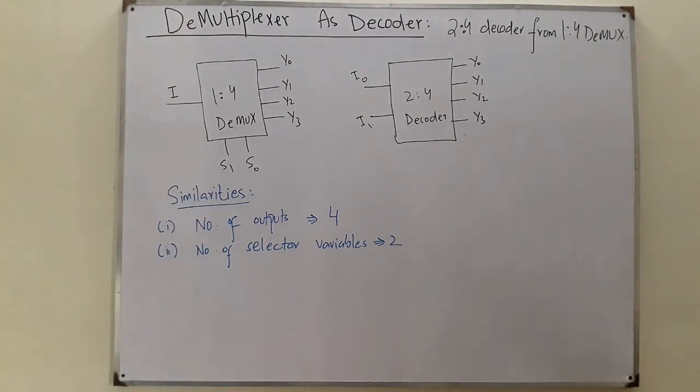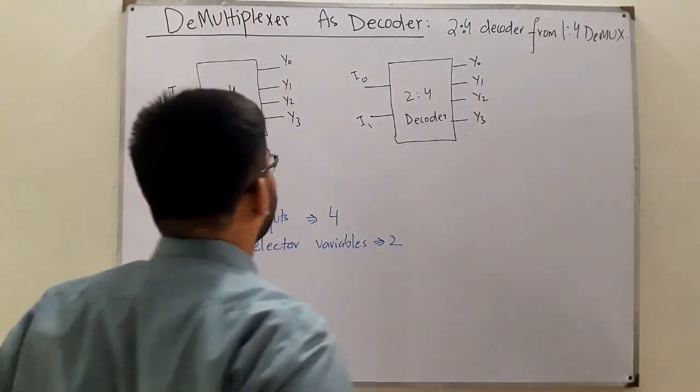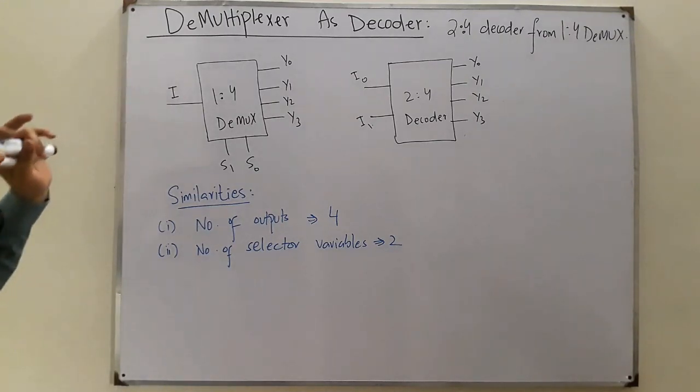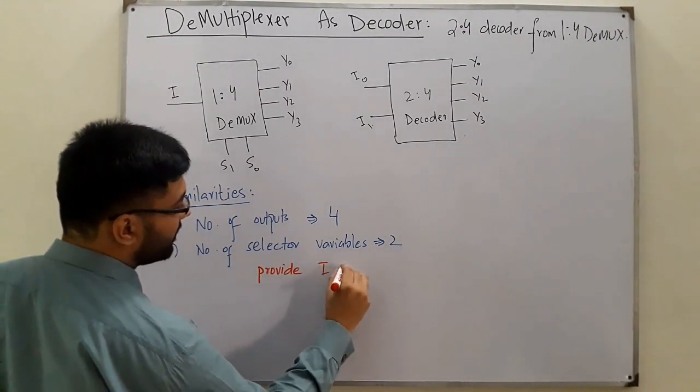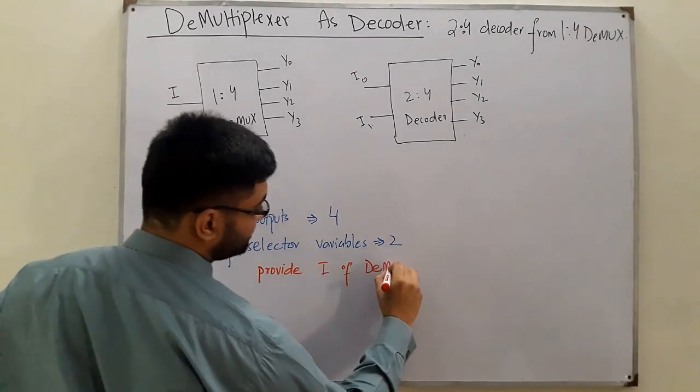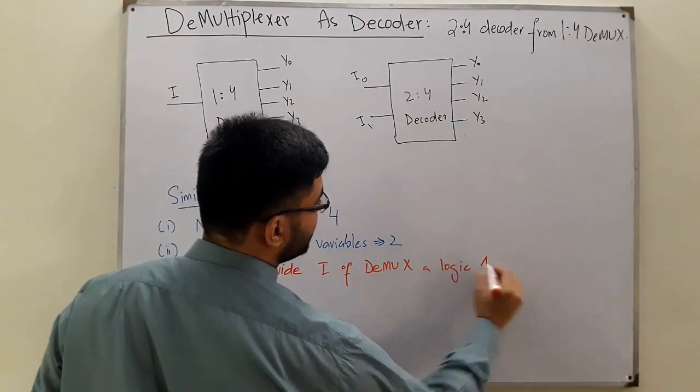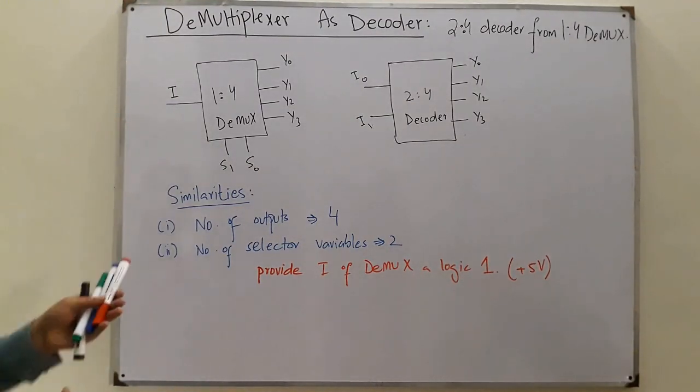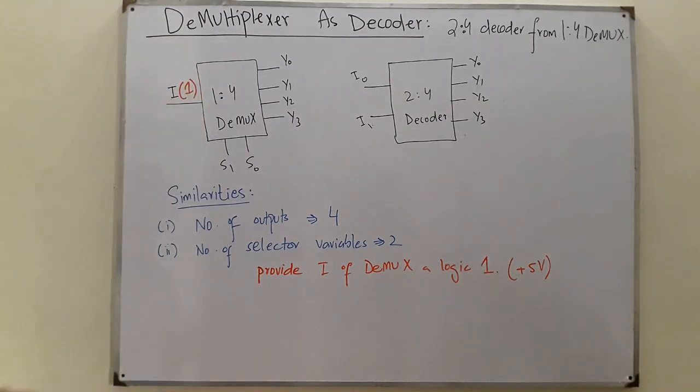Now how to combine this concept together? Four outputs are the same. If I provide this I a logic one—a high state, which means a +5V state in TTL logic—this one would be connected to these different outputs depending on S1 and S0.